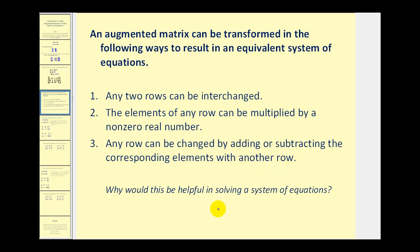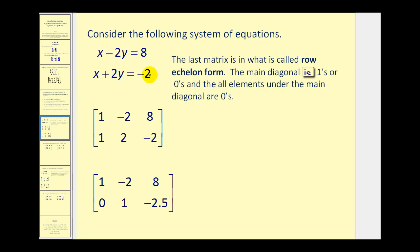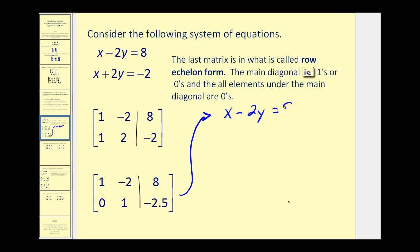You might be asking why this would be helpful in solving a system. Going back to our first example, here is our augmented matrix. Using the allowed row operations, we could transform this matrix into a new form. If we rewrite that transformed matrix as a system of equations, the first row gives us x minus 2y equals 8, and the second row gives us y equals negative 2.5. So we already have the value of y for this system.